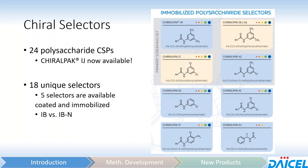Just for your own enrichment: IA is the immobilized version of ChiroPak AD; IB and IBN is the immobilized version of OD; IF is the immobilized version of AZ; IH is the immobilized version of AS; and our newest one, IJ, is the immobilized version of OJ.